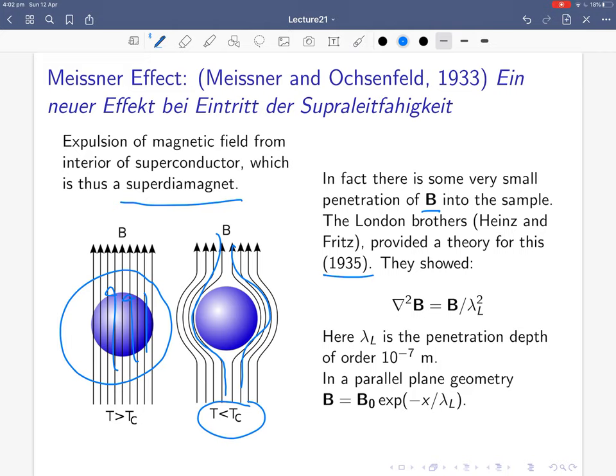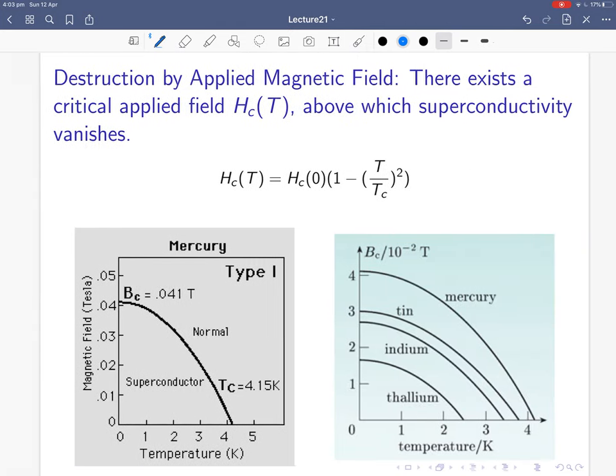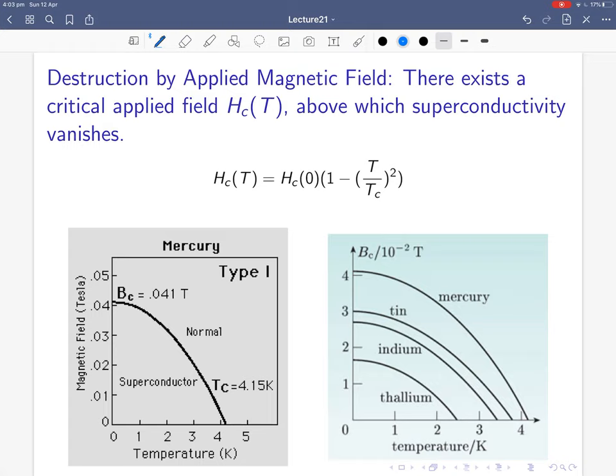If you look at it more closely, you find that there is some very small penetration of the magnetic field into the sample. This was shown by the London brothers, Heinz and Fritz, who provided theory of this in 1935. They sound like they're British, but in fact they're both German, Jewish, and were forced to flee from Germany during the Nazi regime. Both fled to England at once and were both at Oxford for a while. They showed that grad squared B equals B over lambda L squared, where lambda L is the penetration depth, of order 10 to minus 7 meters.